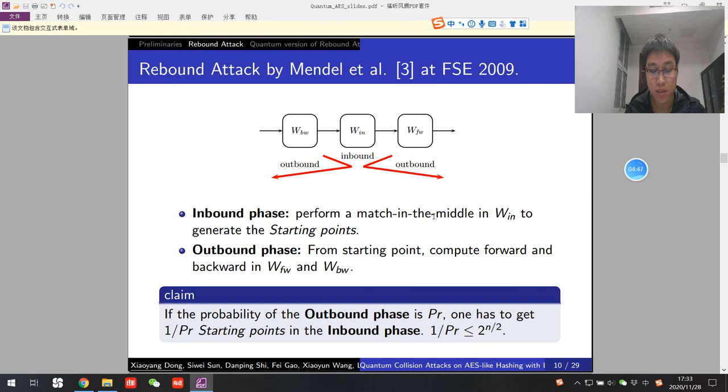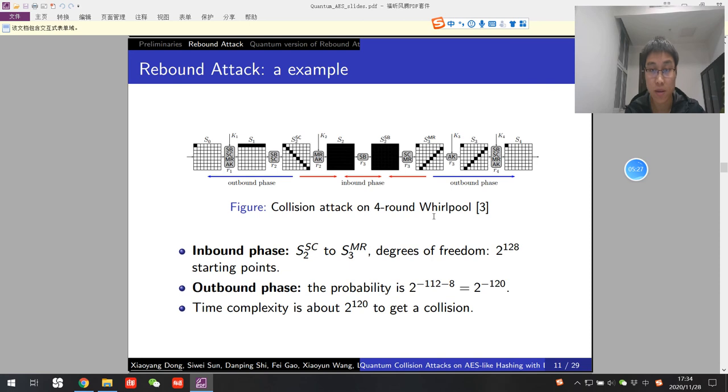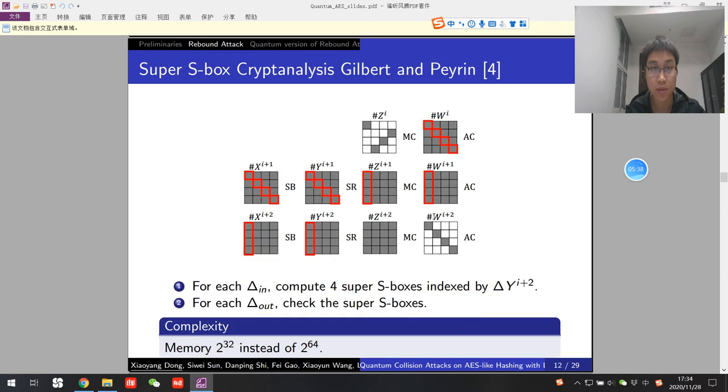Rebound attack is introduced by Mendel at FSE 2009. It has two phases by dividing the cipher into two paths, inbound path and outbound path. Inbound path uses a match in the middle method to generate starting points. Outbound path is to compute in both directions. If the probability of the outbound path is Pr, then we have to collect 1 divided by Pr starting points in the inbound phase. Here is an example. On the four-round Whirlpool, we have to collect 2 to 120 starting points to get a collision.